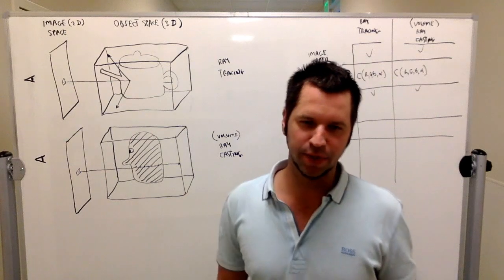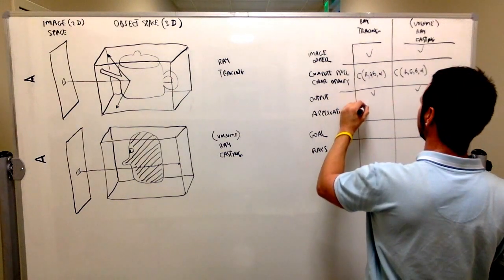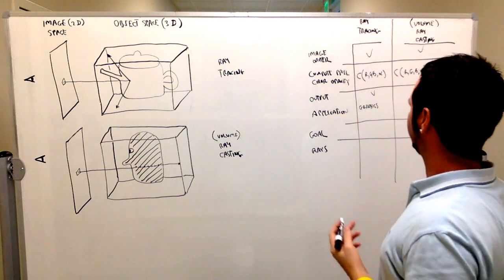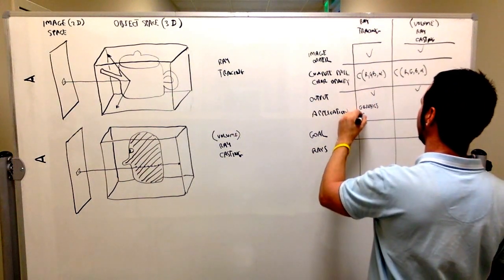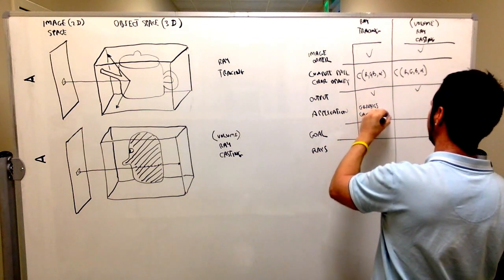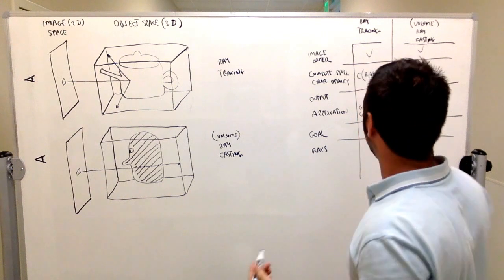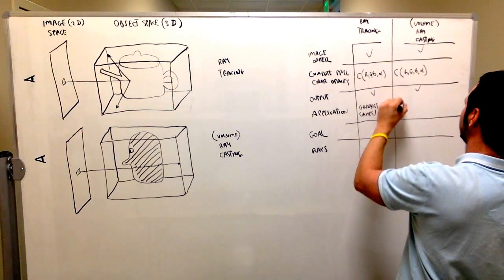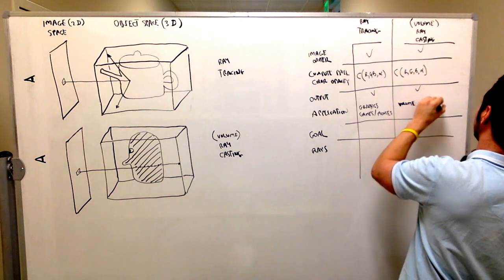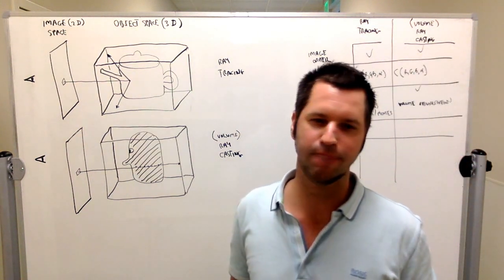The application is different. In ray tracing, the application is computer graphics—you do things like play games and make movies like Lord of the Rings. In volume ray casting, the application is visualization, specifically volume visualization, and one of the most popular applications is medical visualization.